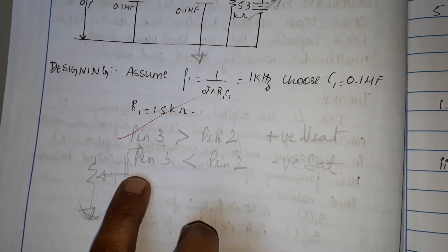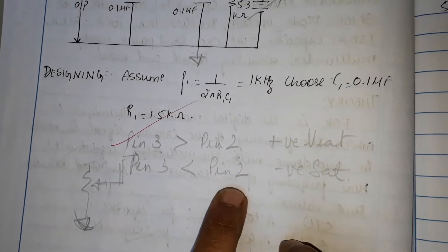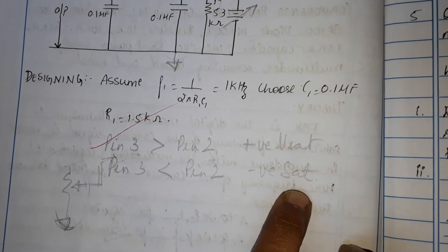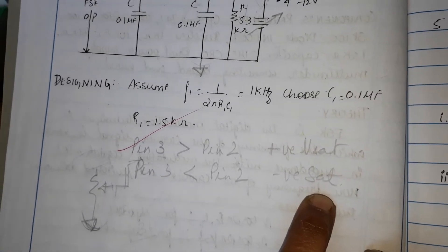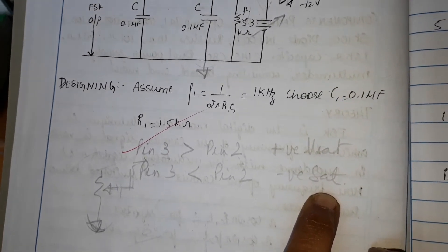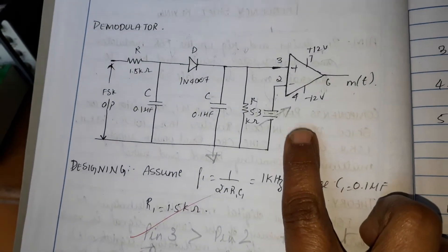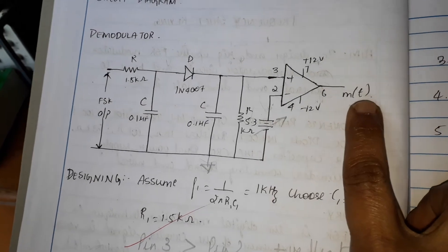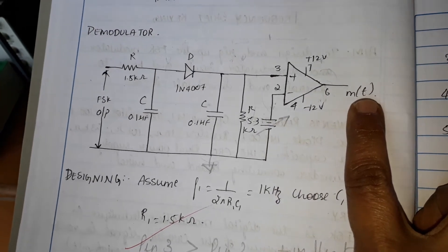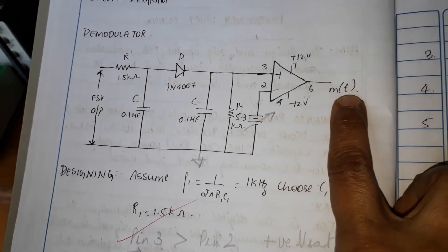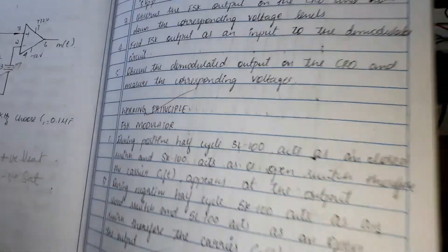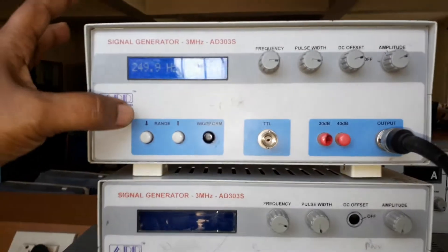When the voltage at pin number three is less than that of pin number two, the output goes to negative V-sat. So if the output is not a perfect square wave, connect a small regulated supply at pin number two. We should get back the original m(t) signal that was given at the input, maybe with a certain delay.